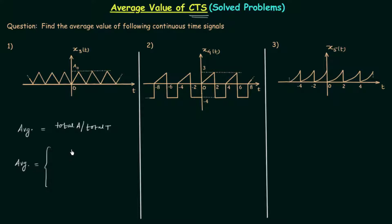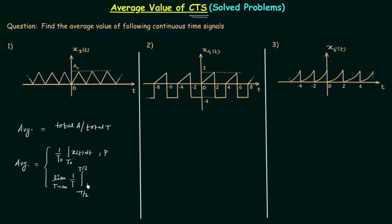For periodic signals, we first obtain the total area in one period. We integrate the periodic signal with respect to t over one fundamental time period, then divide the total area by the total time to get the average value. For non-periodic signals, we perform the integration from minus infinity to infinity: the limit as T tends to infinity of 1/T, times the integral from -T/2 to T/2 of the non-periodic signal x(t) with respect to t.